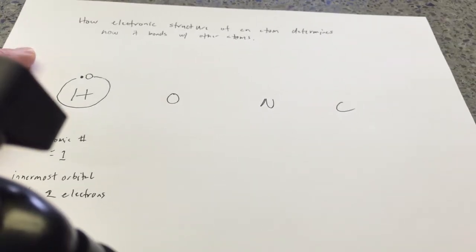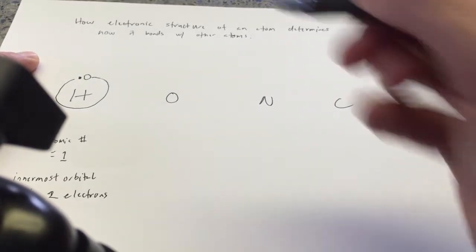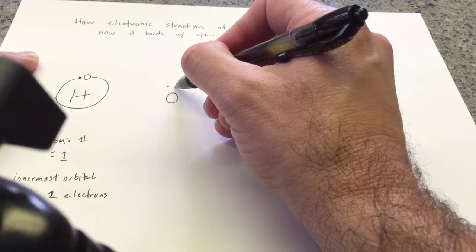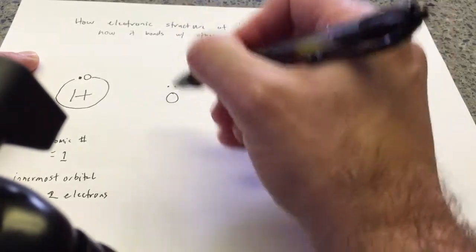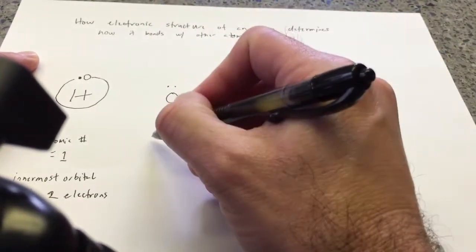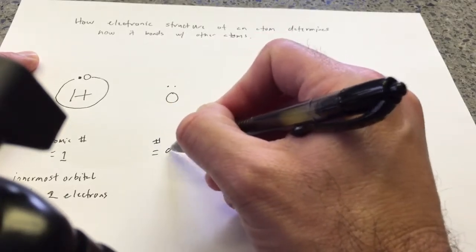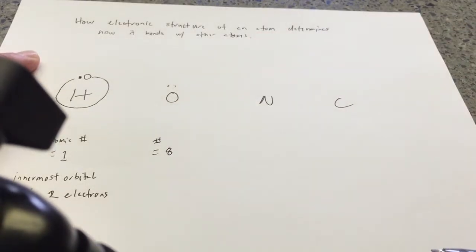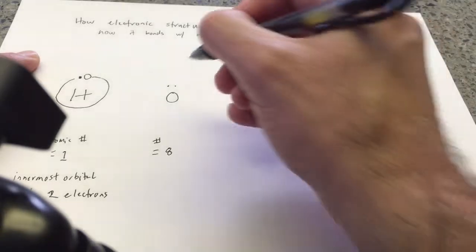Now the atomic number of oxygen, okay, is one, two, three, four, five, six, seven, eight. So its atomic number equals eight. So the innermost orbital, how many electrons can we have? Up to two. Bam. That innermost orbital is full. Okay?